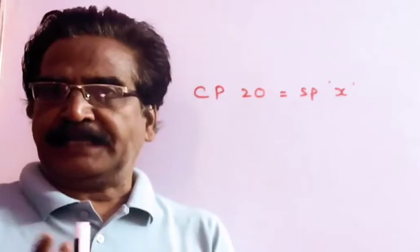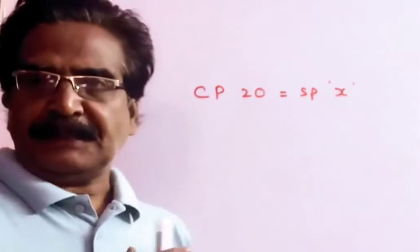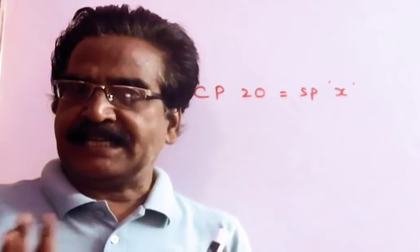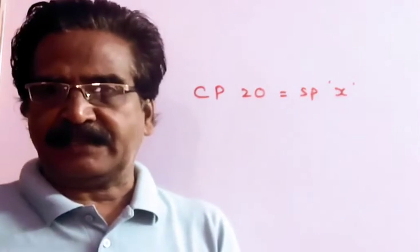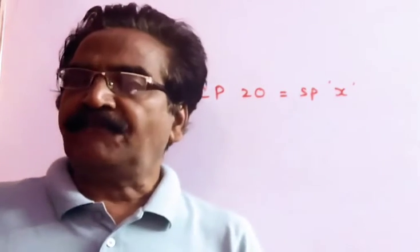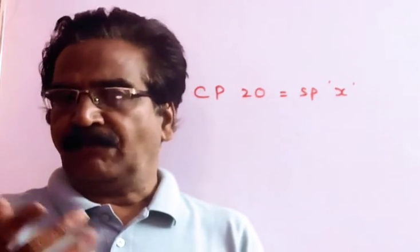Cost price of 20 articles is equal to selling price of X articles. If the profit is 25%, what is X?